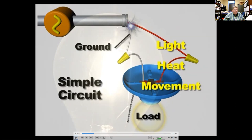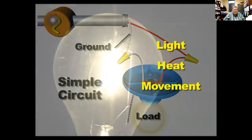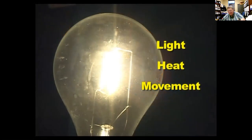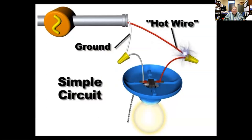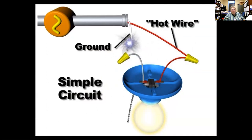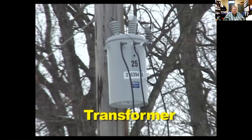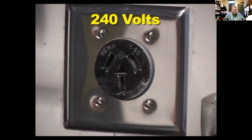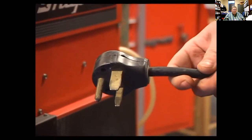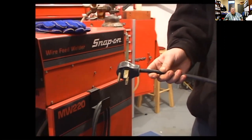The load changes electrical energy into another form such as light, heat, or movement. The term 'hot wire' in house wiring refers to the wire that carries current and voltage to the load — electricians often use black or red wire to carry 120 volts AC out to the load. A large industrial transformer steps down power line voltage to 120/220 volts AC for residential use. 240-volt receptacles use larger terminals arranged so only a high-voltage plug will fit.